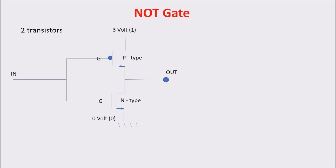So, how do we build the NOT gate? We build it with just 2 transistors, an N-type and a P-type. The N-type is connected with the lower voltage, our 0. The P-type is connected with the higher voltage, our 1. This way only takes 2 transistors and not 4, as if we used only NAND gates.